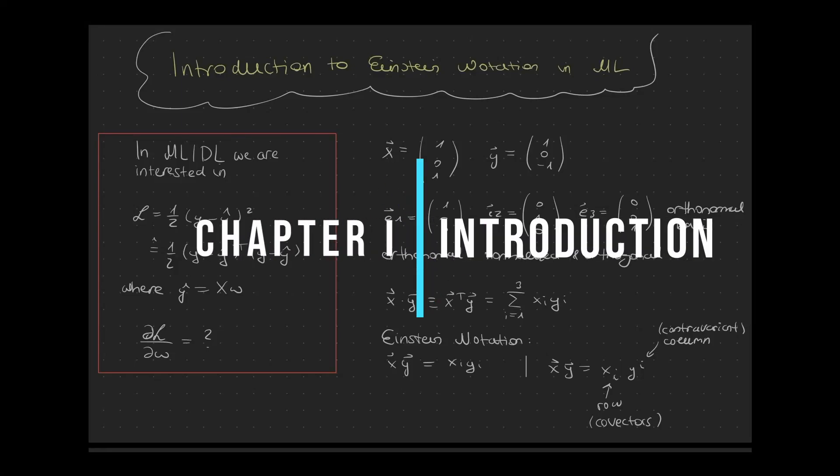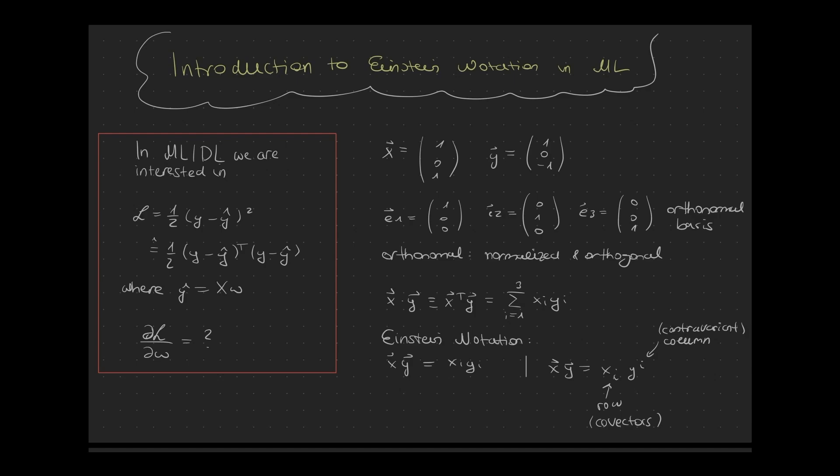Welcome to this video. Today we are talking about Einstein's notation in machine learning and deep learning and how it can help us. In machine learning and deep learning we are very interested in objective functions, since we use them to assess the loss and we compute the gradients out of these objective functions in order to train our models.